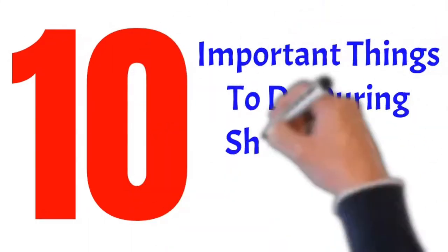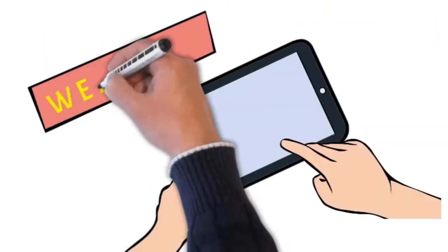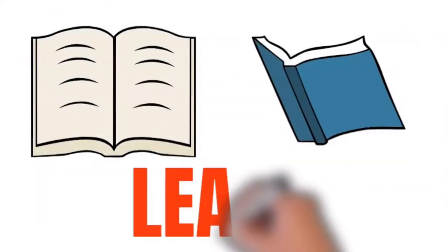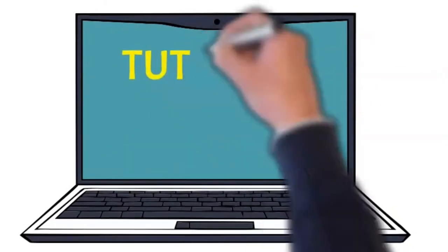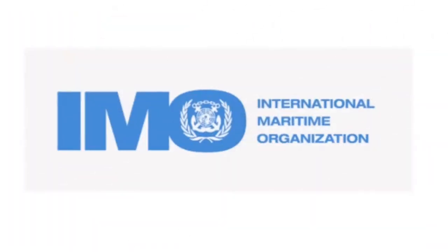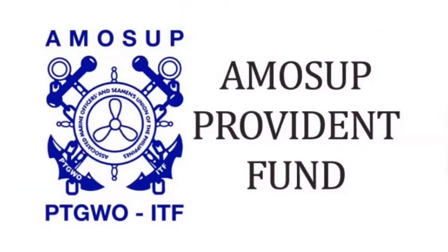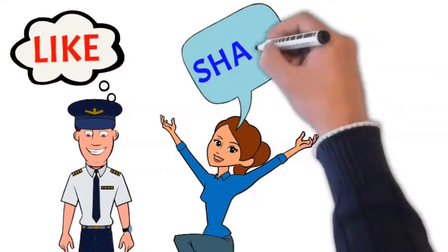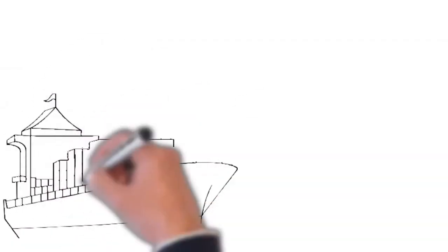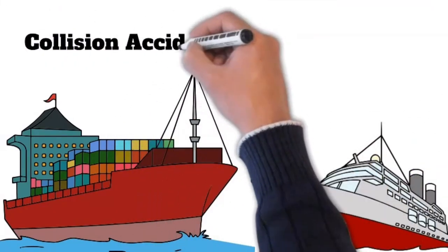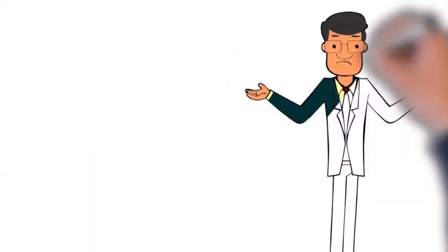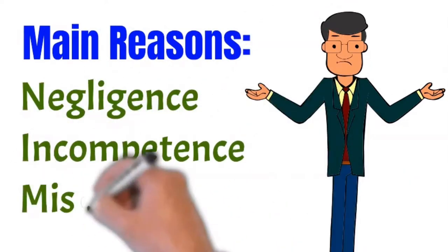10 important things to do during ship collision accident. Even with the latest developments in navigational equipment and communication systems, collision accidents between ships continue to occur around the world. Some of the main reasons for such accidents are negligence, incompetence and miscommunication.